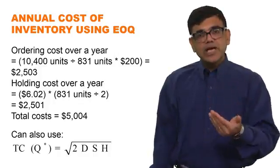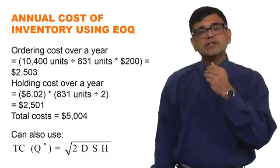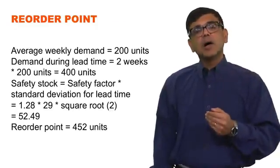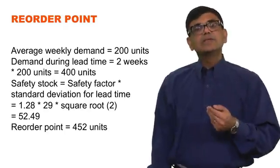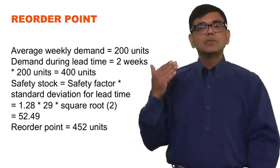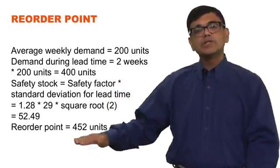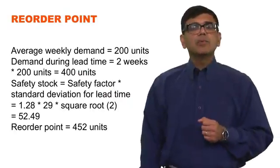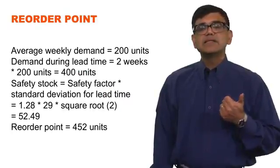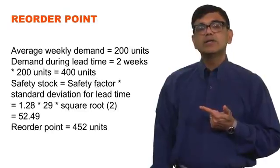Given that Bintu is following the continuous review system and using the EOQ to decide how much to order, how does she decide when to order? For that, additional information is used to compute her reorder point. She continuously reviews inventory and places an order whenever it reaches a certain level. The lead time is two weeks, and the average weekly demand is 200 units — derived either from the data table or from dividing annual demand of 10,400 by 52 weeks.